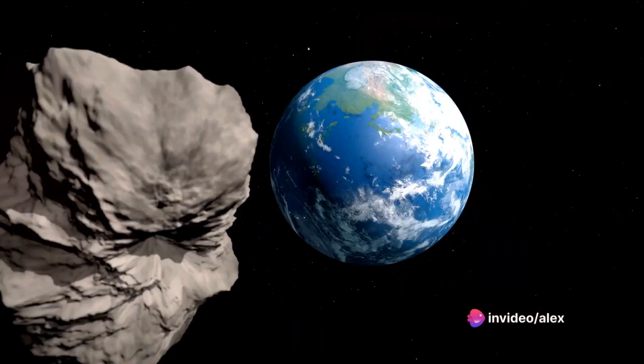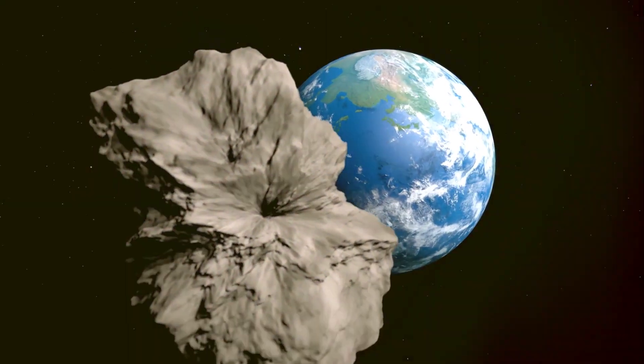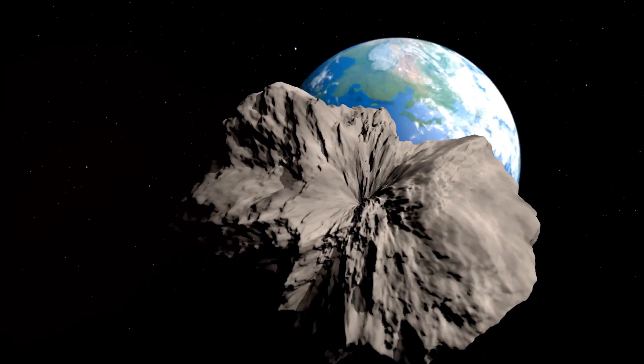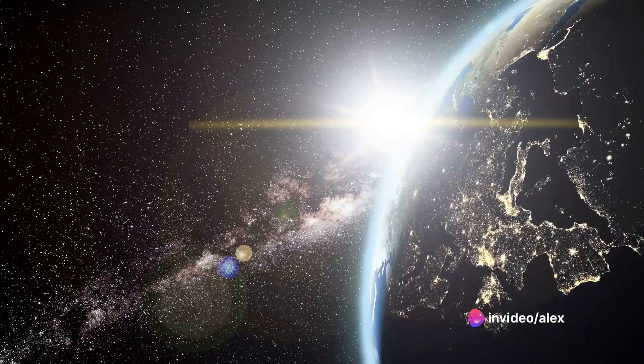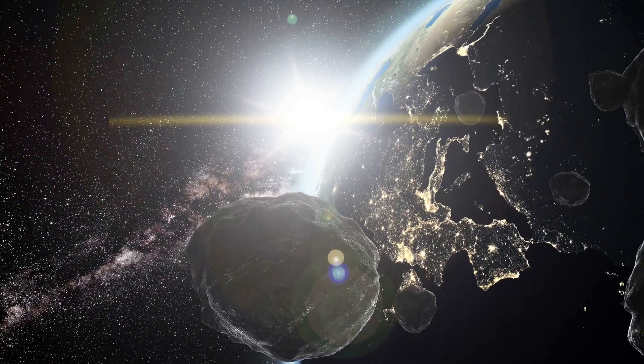The Earth might start spinning faster or slower, or its orbit could become more elliptical. This would lead to drastic changes in our climate beyond the global winter. We could see more extreme seasons, or even a shift in the location of the poles.